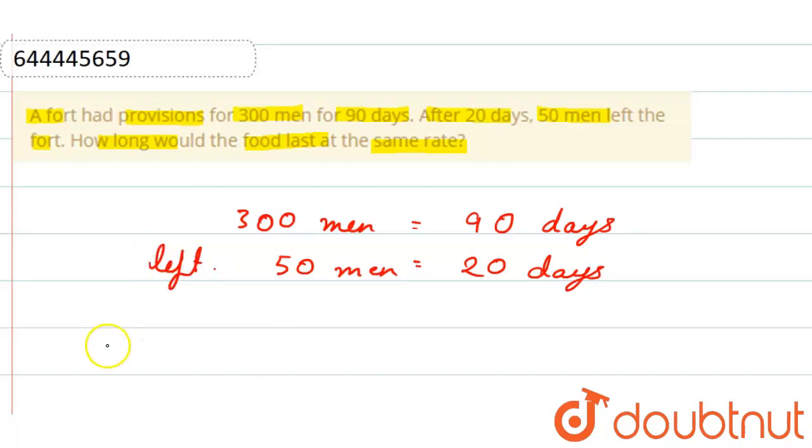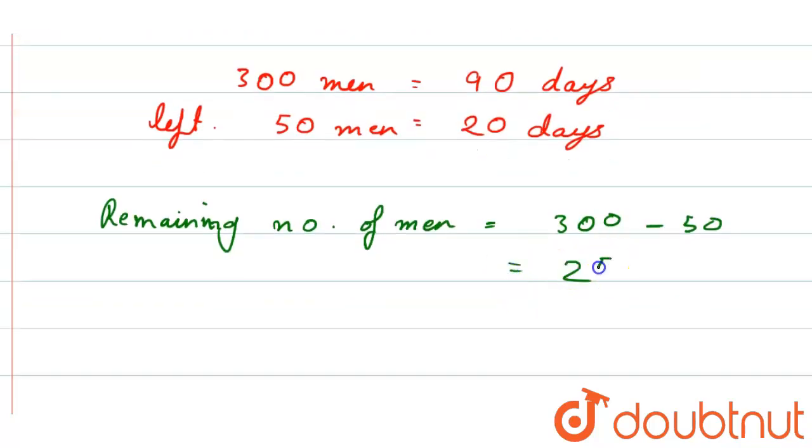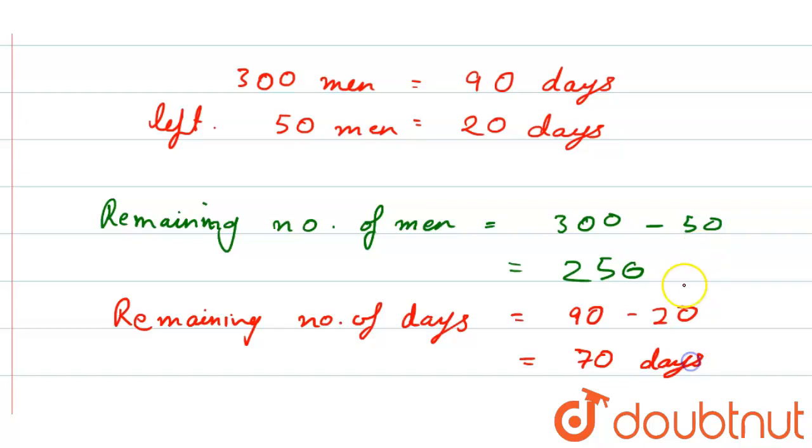So here we can write remaining number of men, that is 300 minus 50, that will be 250. And remaining number of days, that is 90 minus 20, that is 70 days.